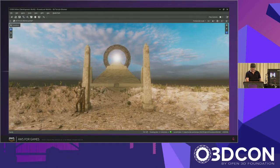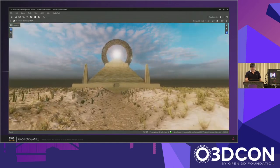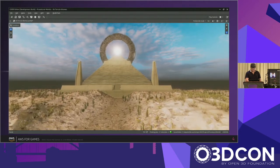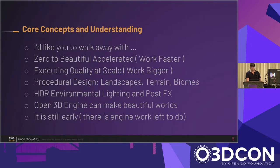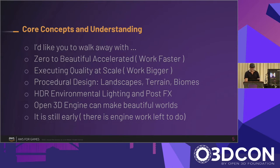Today we're going to be talking about a lot of the touch points that would allow you to build a relatively simple scene like this, but something that looks good — some lighting and some vegetation systems. What I'd like you to walk away with is that if you think about the way that you design your worlds, you can build modular content. You can build smaller reusable pieces like prefabs, so you could make a grasslands biome once but share it across multiple levels. I want to promote the idea that you can work faster and bigger if you just think about design. We're going to talk about landscapes, terrain, biomes, HDR environmental lighting, and post effects. And I want to show you that even though it's early, Open 3D Engine can make beautiful things today.